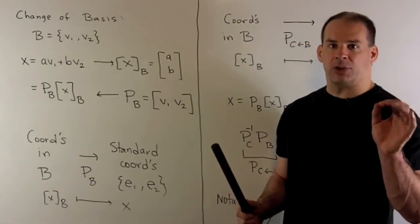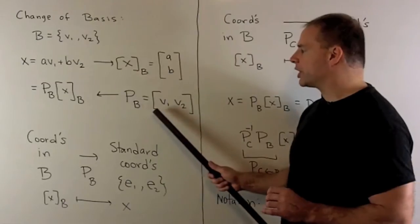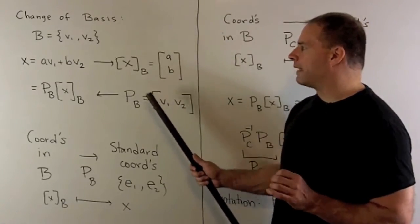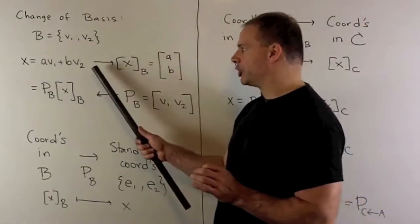If I set up the matrix P_B equal to [V1, V2], so this is our basis matrix, I get X by taking P_B, multiplying it by the coordinate vector X_B. That rebuilds this linear combination here.